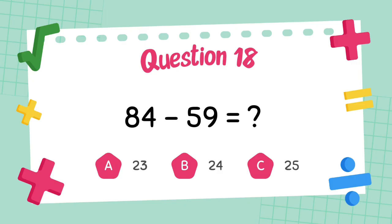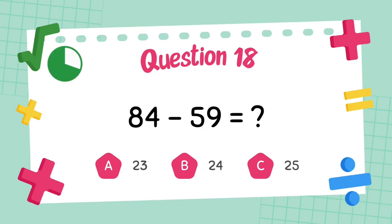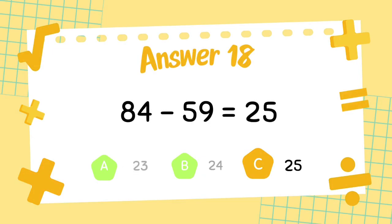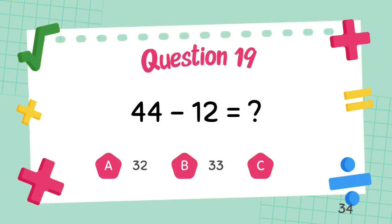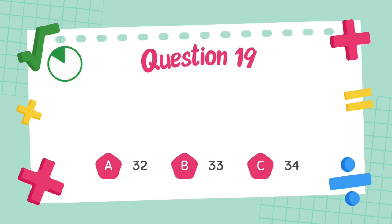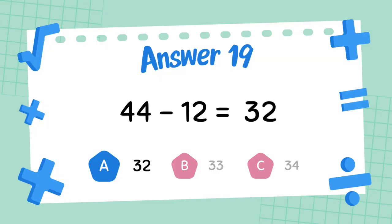What is 84 minus 59? The answer is 25. What is 44 minus 12? The answer is 32.